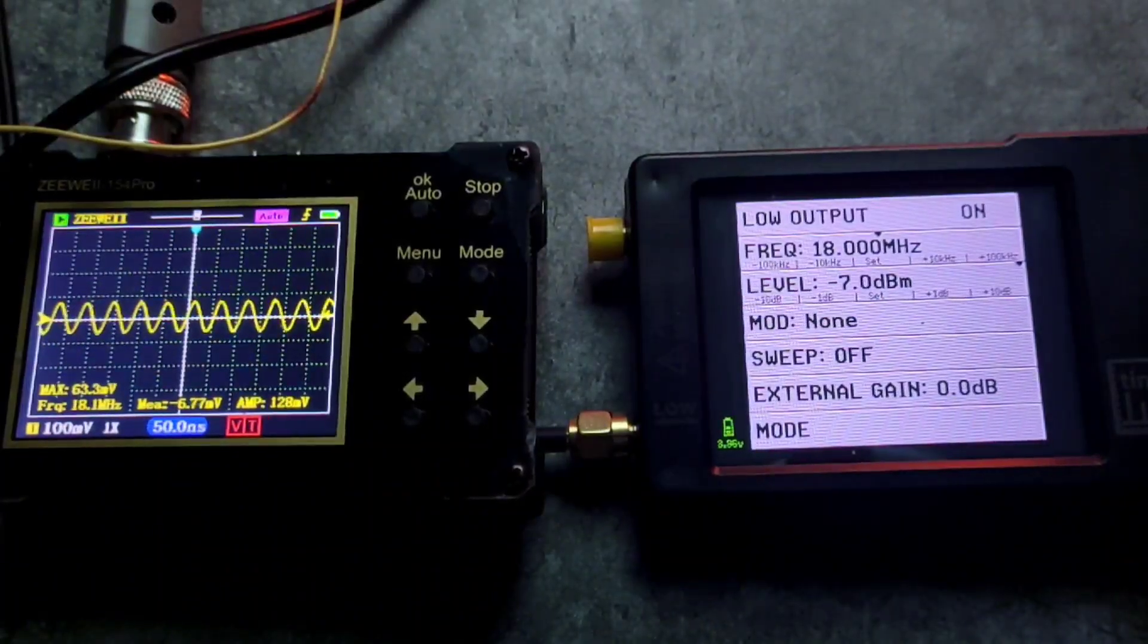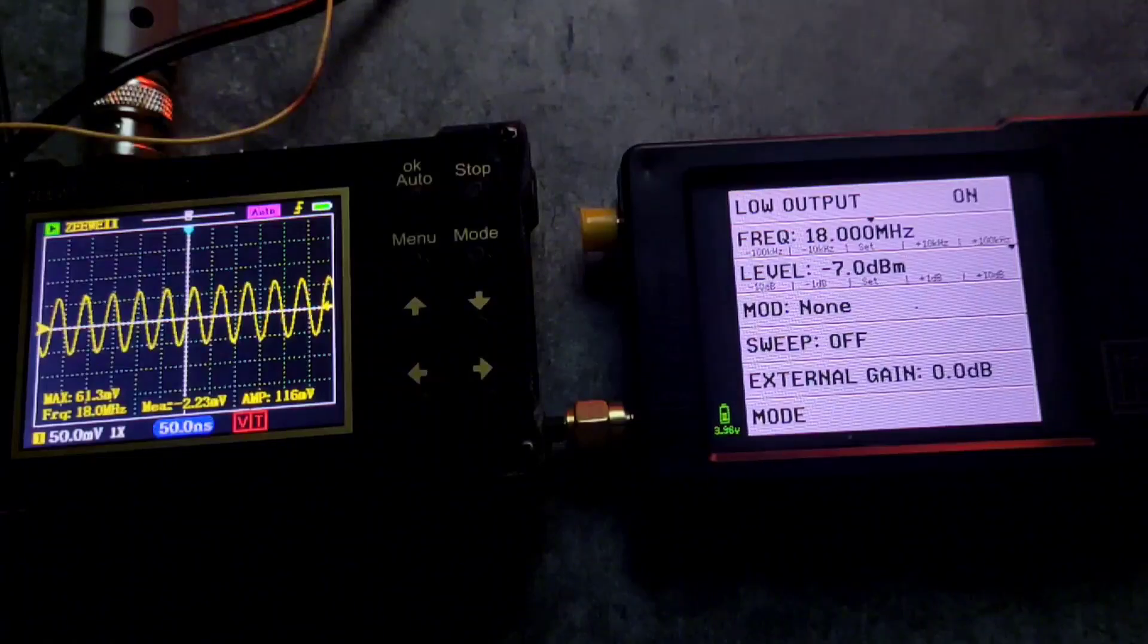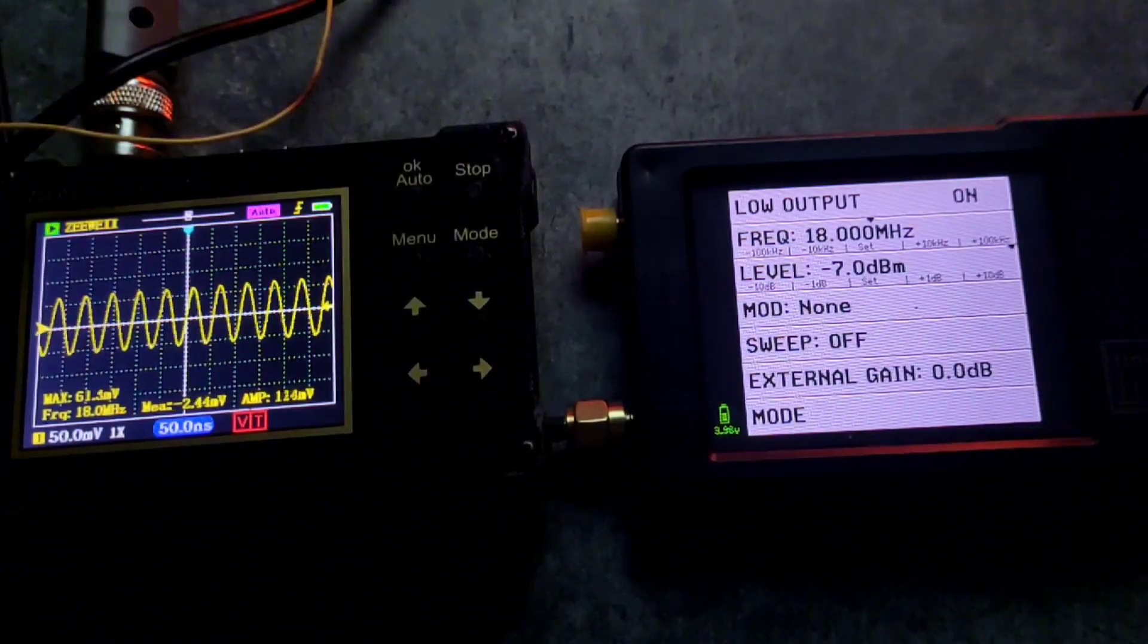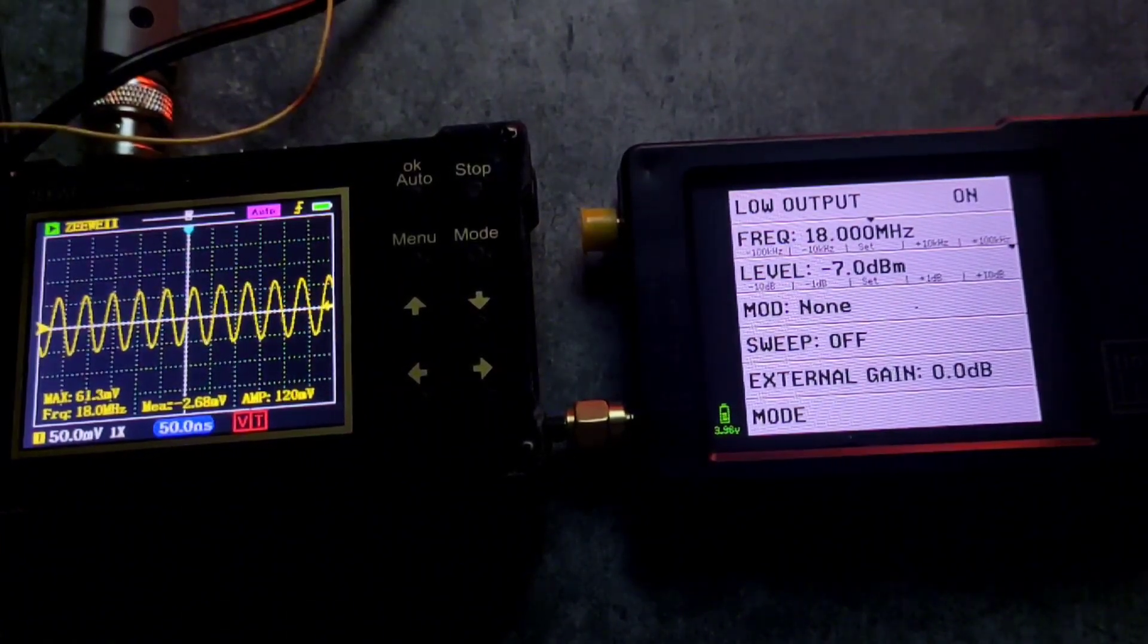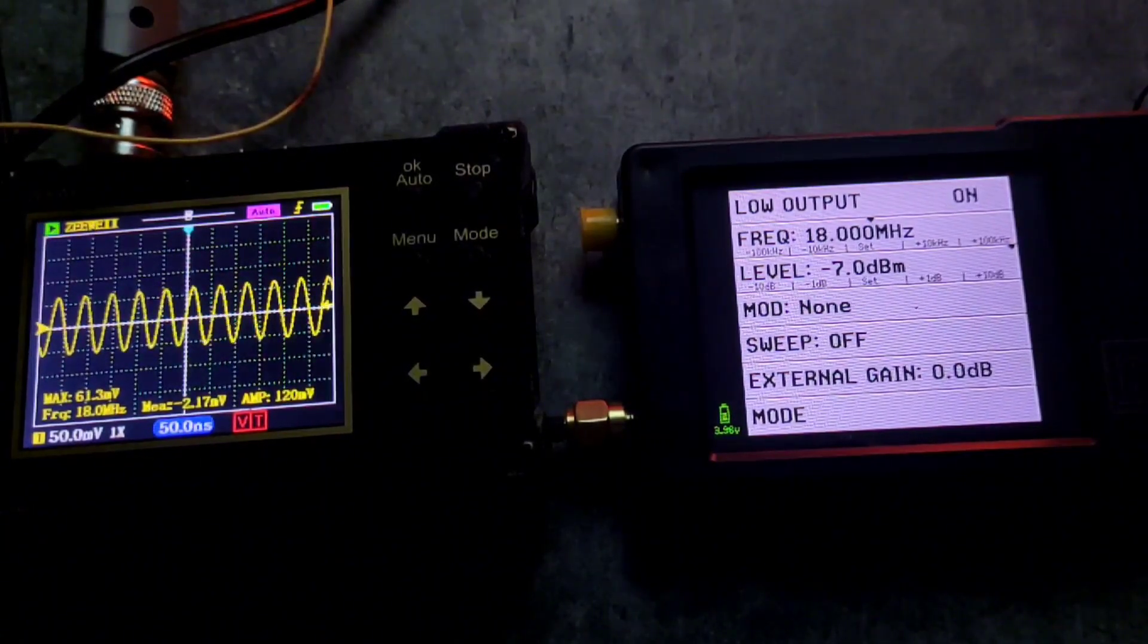And now we are going to do the maximum that my oscilloscope can do, 18 MHz. We can see that it is in fact 18 MHz when set at 18 MHz and unfortunately once again this is the maximum frequency that my oscilloscope can read but we can confirm that the frequency generator of the TinySA is also pretty reliable.